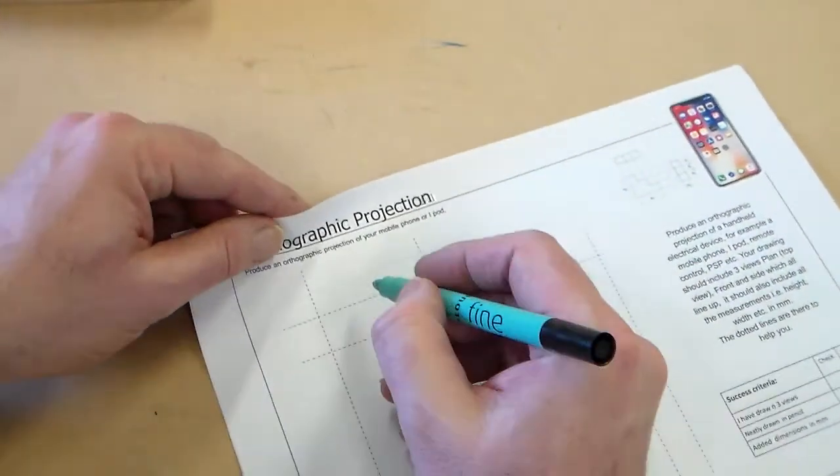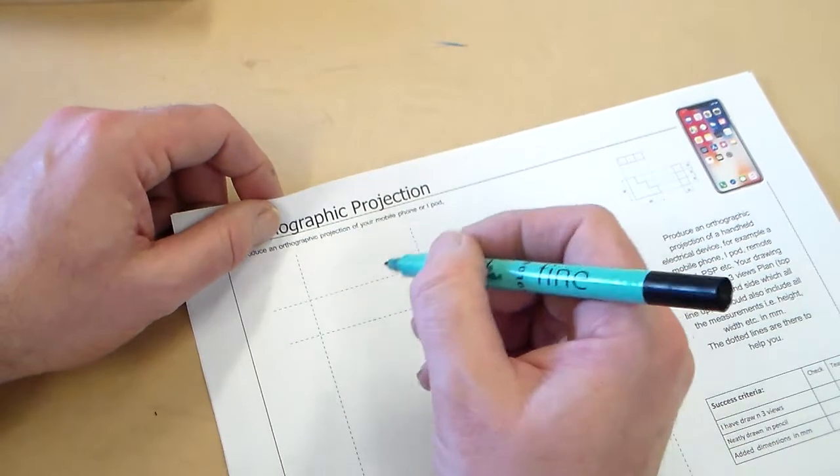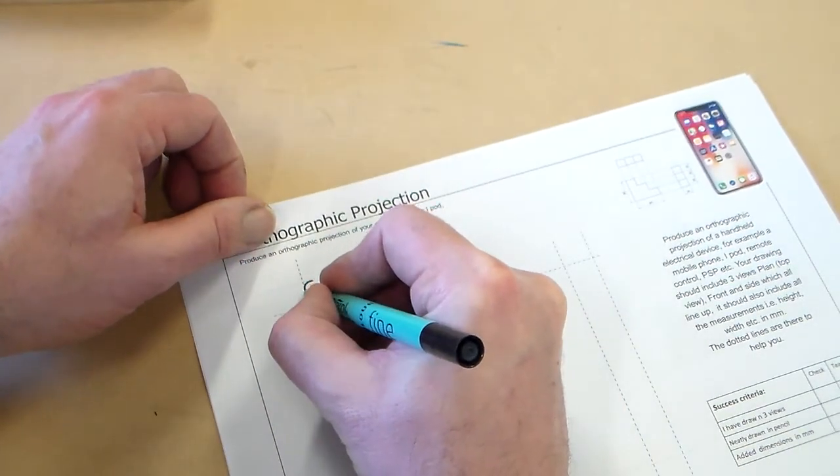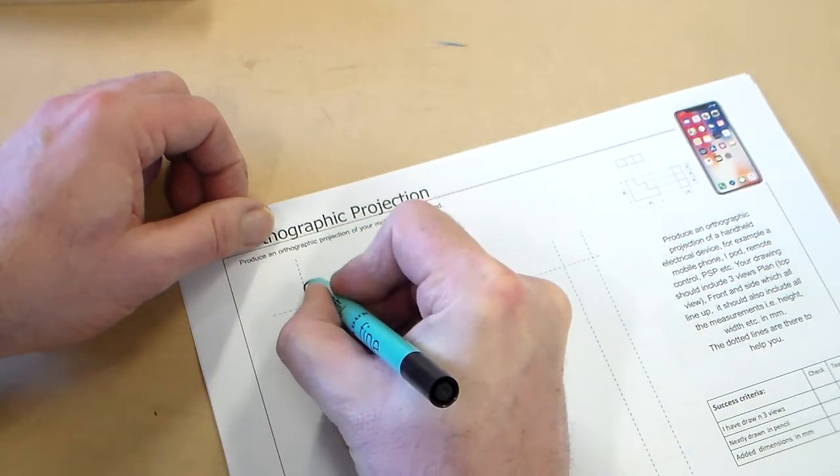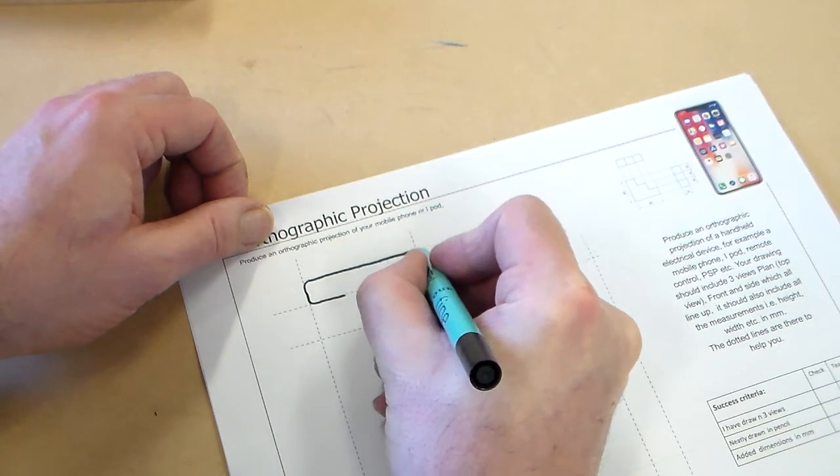So I'm going to try and draw those in again. I'm going to use the fineliner. I'm going to draw the top views in using the grid that I've got.